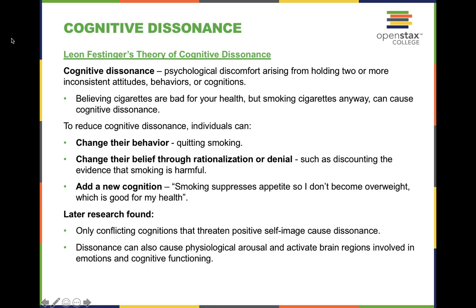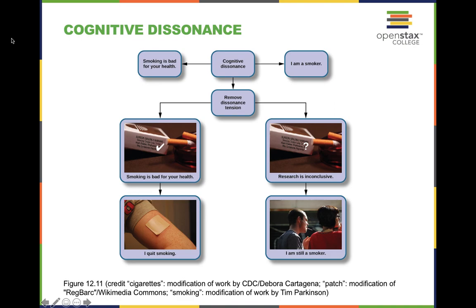First, you can simply change the behavior — stop smoking, for example, though that's easier said than done with addiction. Second, you can change the belief — telling yourself the harms of smoking are inconclusive, or that your grandfather smoked until he was 90 so you'll be fine. Many people know they probably shouldn't abuse a substance but still engage in the behavior due to psychological or physical addiction.